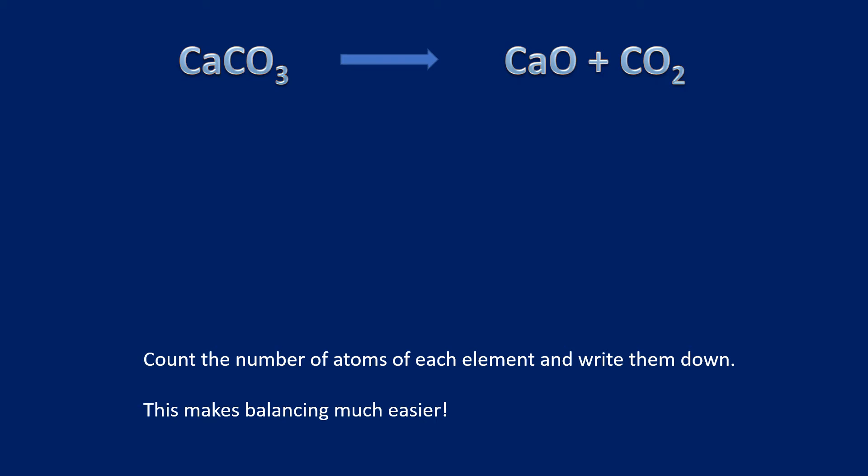There we have a symbol equation. We won't use word equations at all at A-level — it will all be symbol equations. The first thing we need to do is identify the elements present in this reaction. We can see we've got Ca (calcium), C (carbon), and O (oxygen). What we need to do is count how many we have on each side.